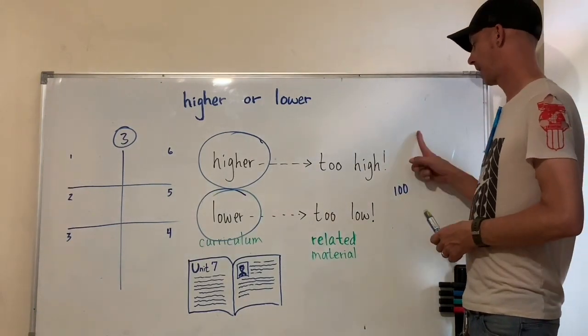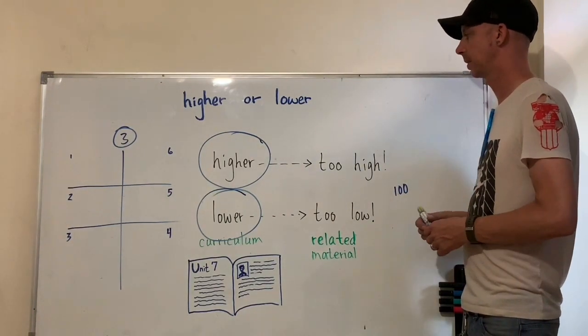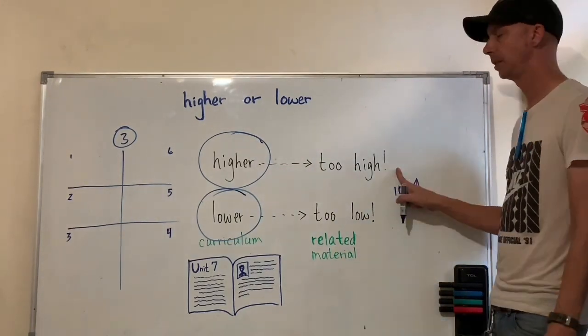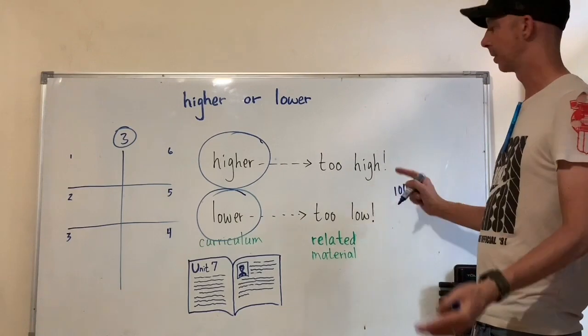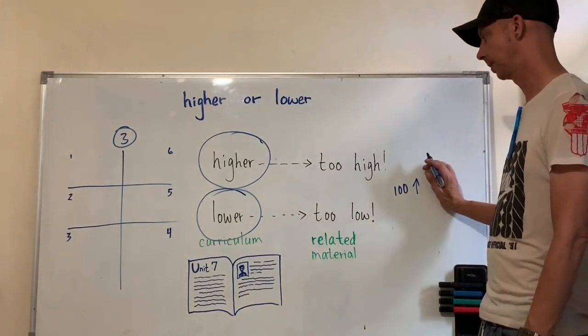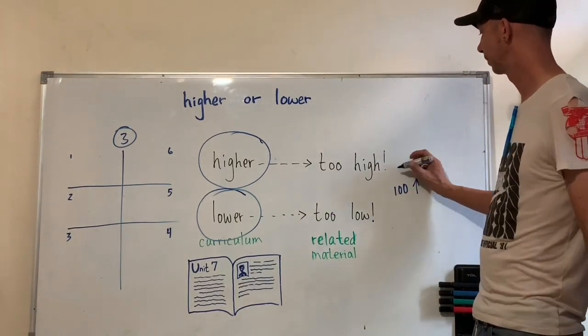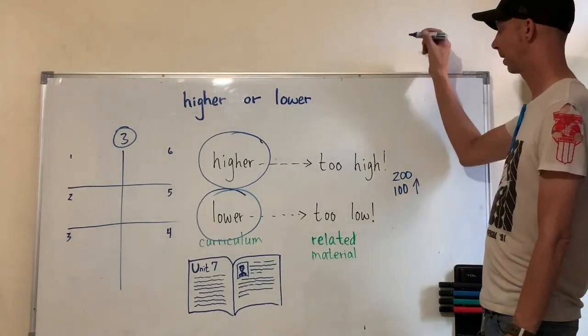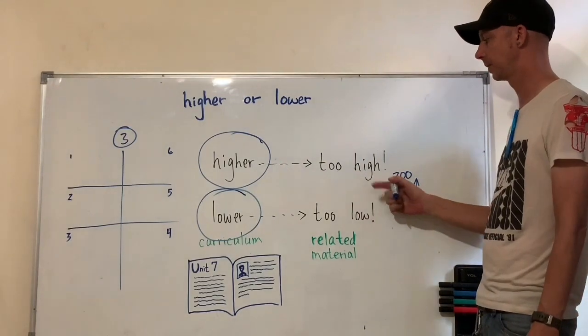If they think the number is higher than 100 or lower than 100, they'll say higher. Okay, you choose higher, but that's not enough. You need to tell me a number which is higher than 100. So maybe they say, hmm, 200. So me, the teacher, I'm going to start writing up on top of this until somebody thinks it gets too high.